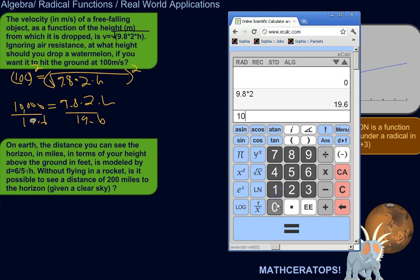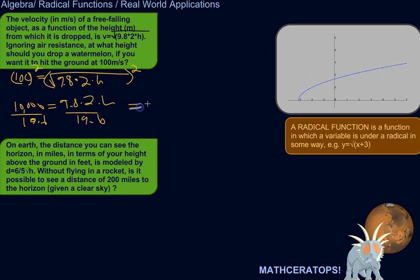So, 10,000 divided by 19.6 is 510, more or less. So, we need to drop it from at least 510 meters above the ground in order to allow it to get up to the speed of 100 meters per second. You know, maybe we really want to smash it real good. I don't know.